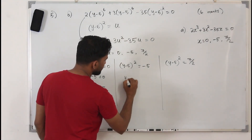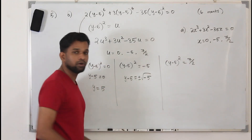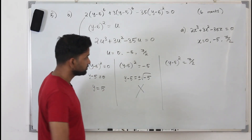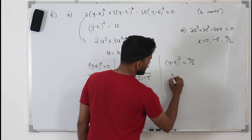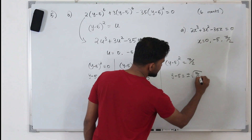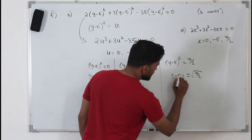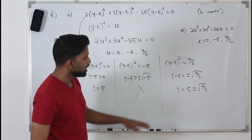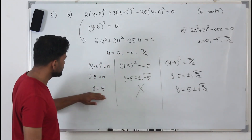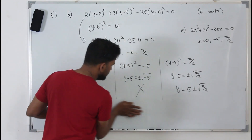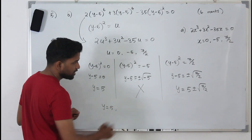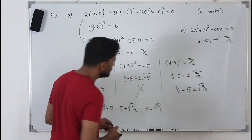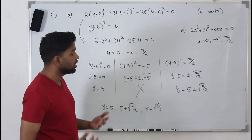For (y-5)² = -5, taking the square root gives ±√(-5), which is imaginary — not a real solution, so we omit it. For (y-5)² = 7/2, taking the square root gives y - 5 = ±√(7/2), so y = 5 ± √(7/2). These are real solutions. Our final real solutions are: y = 5, and y = 5 ± √(7/2).